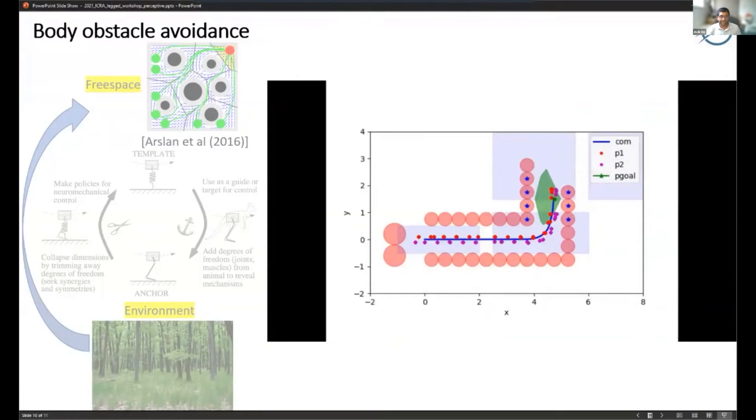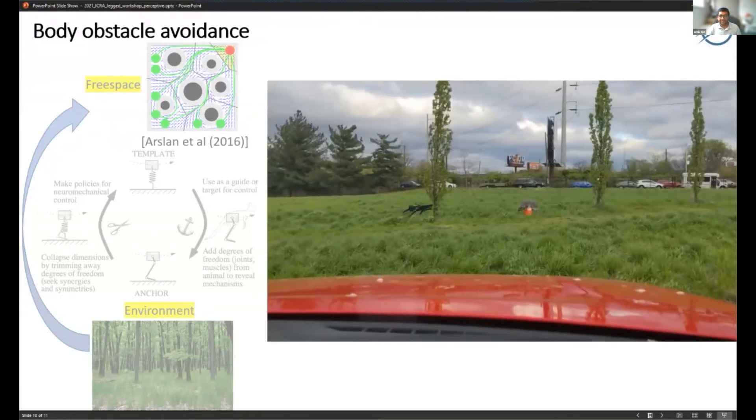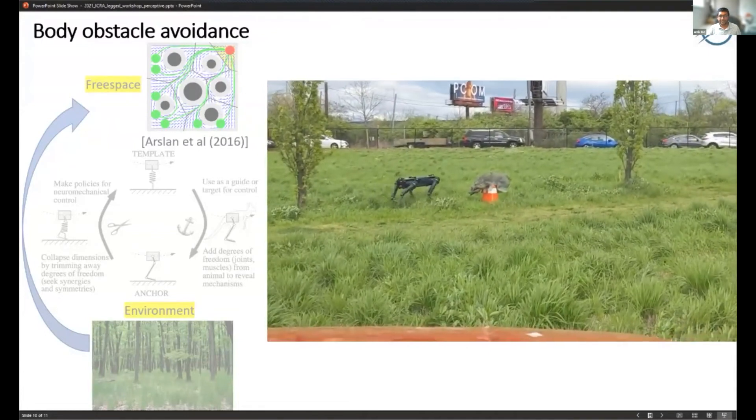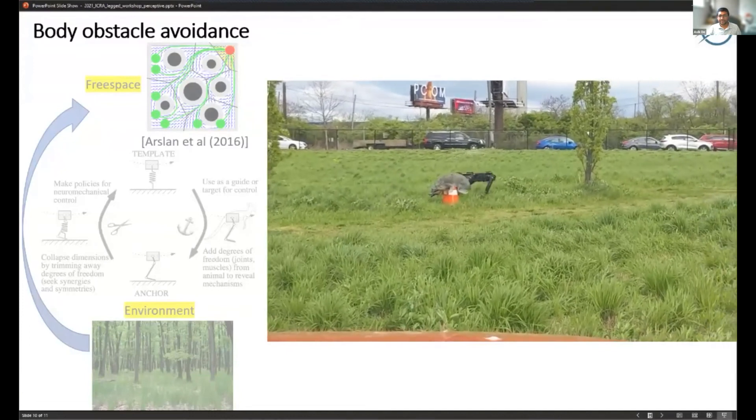This is a little bit simpler than the previous toe obstacle situation because we mostly think about the robot in the horizontal plane for these kinds of obstacle avoidance algorithms.